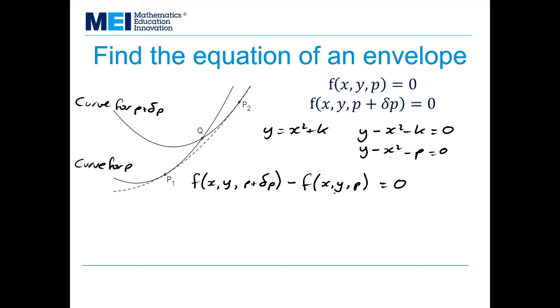Now I'm going to consider what happens as δp tends to zero. Well, what we've got here should remind you of differentiation from first principles. I've got a small change here and then I'm subtracting something without that small change. So what I can do is if I were to divide all of this by δp and then consider the limit as δp tends to zero.